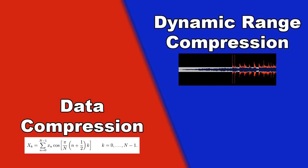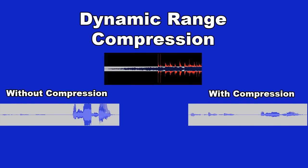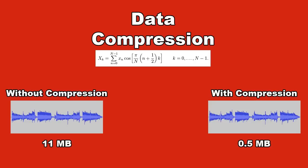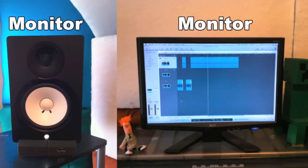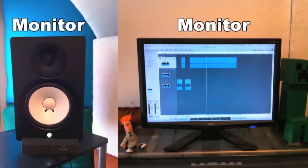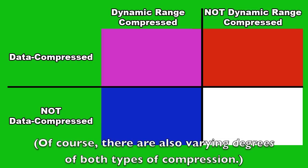Let's review. There are two common meanings for the word compression when referring to audio: dynamic range compression, which makes loud sounds softer and soft sounds louder, and data compression, which trades off a little bit of sound quality in exchange for making the sound file take up much less space on your computer. Remember, these are separate qualities, so you could have a dynamic range compressed sound that is or is not data compressed, and you could have a data compressed sound that is or is not dynamic range compressed.